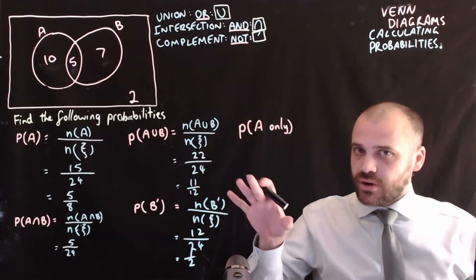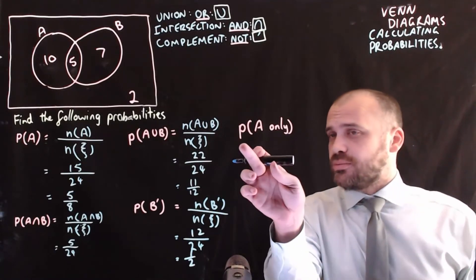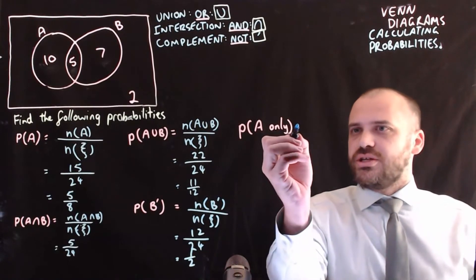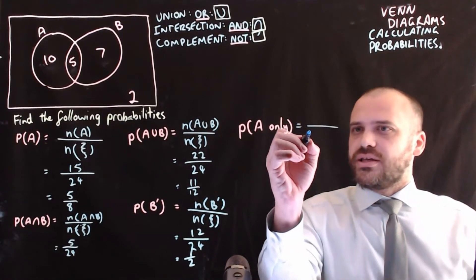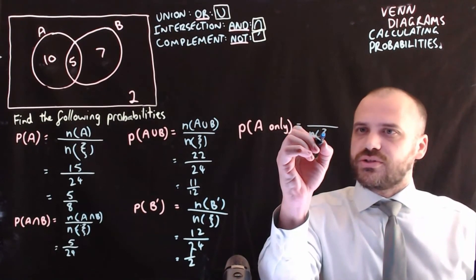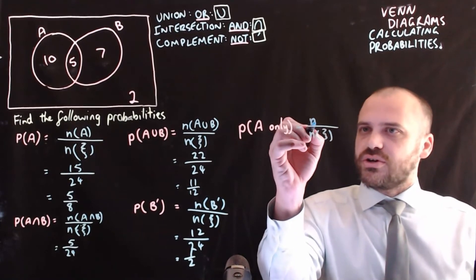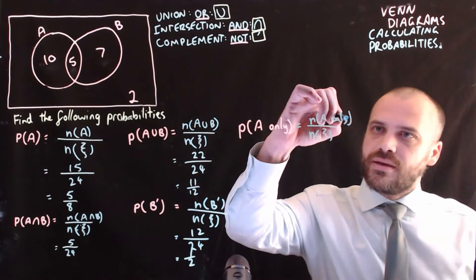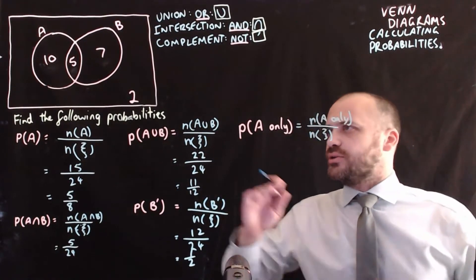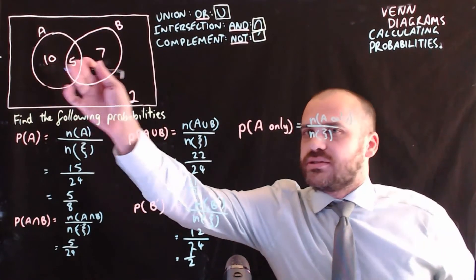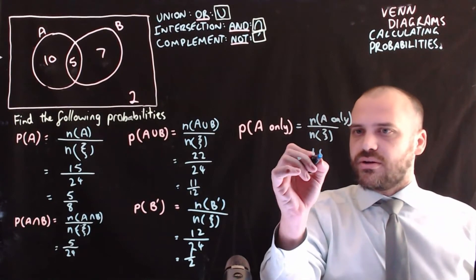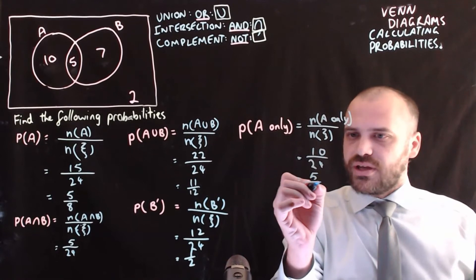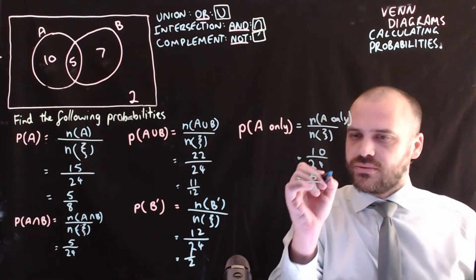One more question: the probability of A only. It's the size of the universal set on the bottom, and the size of A only on top. How many people are doing A only? Just this region: 10. So we've got 10 over 24, which of course is 5 out of 12.